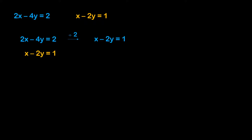The second equation is x minus 2y is equal to 1. Now hold on — these equations are the same, so we're expecting an infinite number of solutions. But let's continue solving as we normally would. We subtract the two equations: x minus x is 0, negative 2y minus negative 2y gives 0, and 1 minus 1 is 0. So we get 0 is equal to 0.